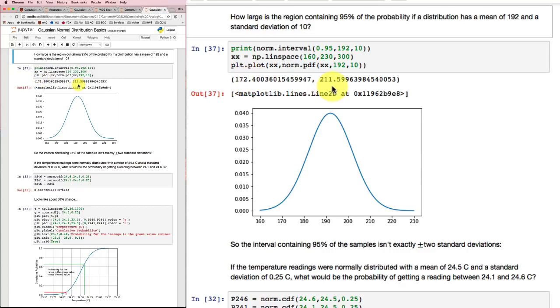Well, I get 172.4 and 211.6. So my two standard deviations thing that said 172 and 212, that's a little bit of approximation. It's not exactly 95%, but it's pretty darn close. So if we look, 172, 212, this region in here of this Gaussian distribution accounts for 95% of the total distribution.